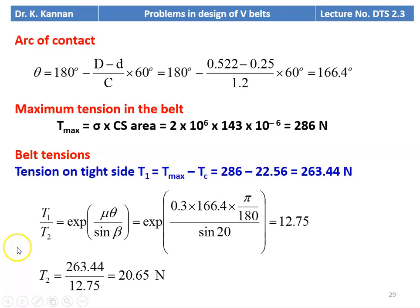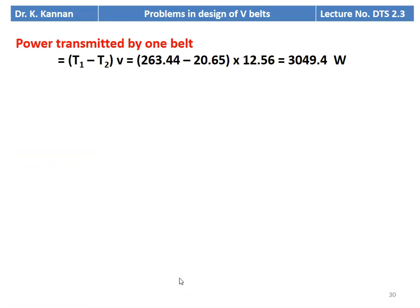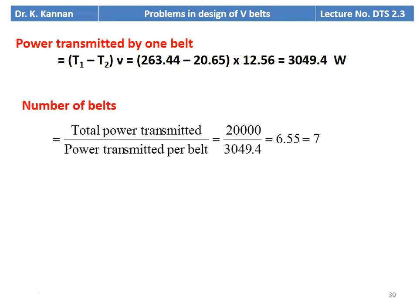Using the relation T1/T2 = e^(μθ/sinβ): with μ = 0.3, θ = 166.4° converted to radians, divided by sin 20°, the ratio equals 12.75. So T2 = 263.44/12.75 = 20.65 N. Power transmitted per belt = (T1 − T2) × V = (263.44 − 20.65) × 12.56 = 3049.4 W. Number of belts = total power / power per belt = 20,000 / 3049.4 = 6.55 ≈ 7. The answer is 7 belts.